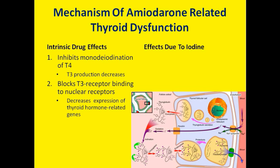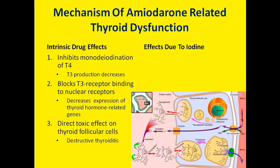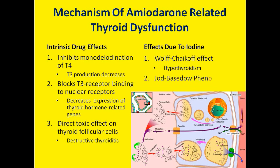Amiodarone can also directly affect thyroid follicular cells, leading to destructive thyroiditis. Due to the effect of iodine, the patient can have thyroid dysfunction via the Wolf-Chaikoff effect, presenting with hypothyroidism, or the patient can develop hyperthyroidism due to the Jod-Basedow phenomenon.